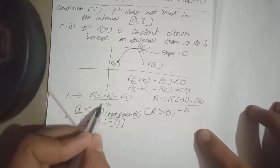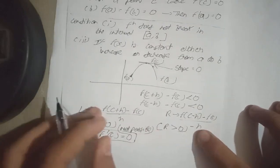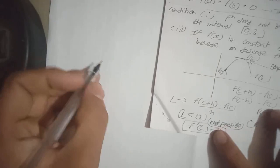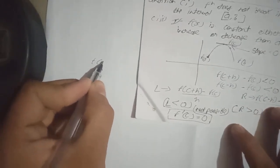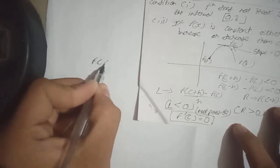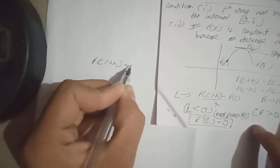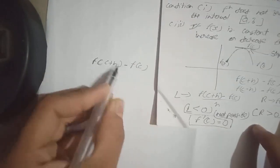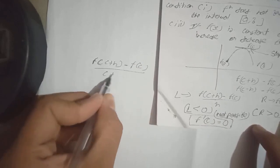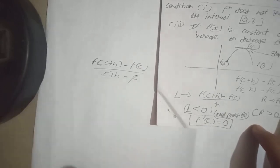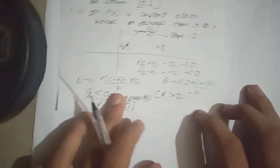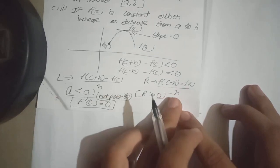Where from this h come? f(c+h) minus f(c), c plus h minus c, so the c cancelled and h is remained here. And similarly minus h is remained here.